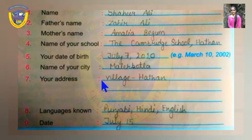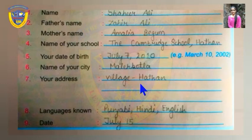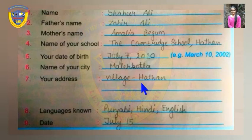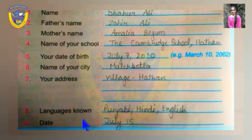Your address can include your village name, district name, or tehsil, but take care of capital letters — write the first letter of your village in capital. For languages known, write languages you can speak, like Punjabi, Hindi, English, or more. Then write today's date, like July 15th.